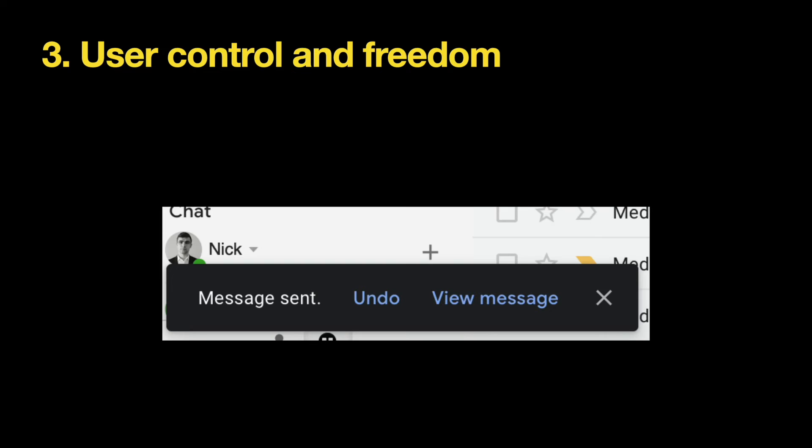Third, user control and freedom. The system should offer emergency exits because people make mistakes when they interact with a product. Users should be able to undo and redo actions. For example, when users send a message using Gmail, the service offers a confirmation dialog with an undo button, allowing users to cancel the sending if the message was sent by accident.